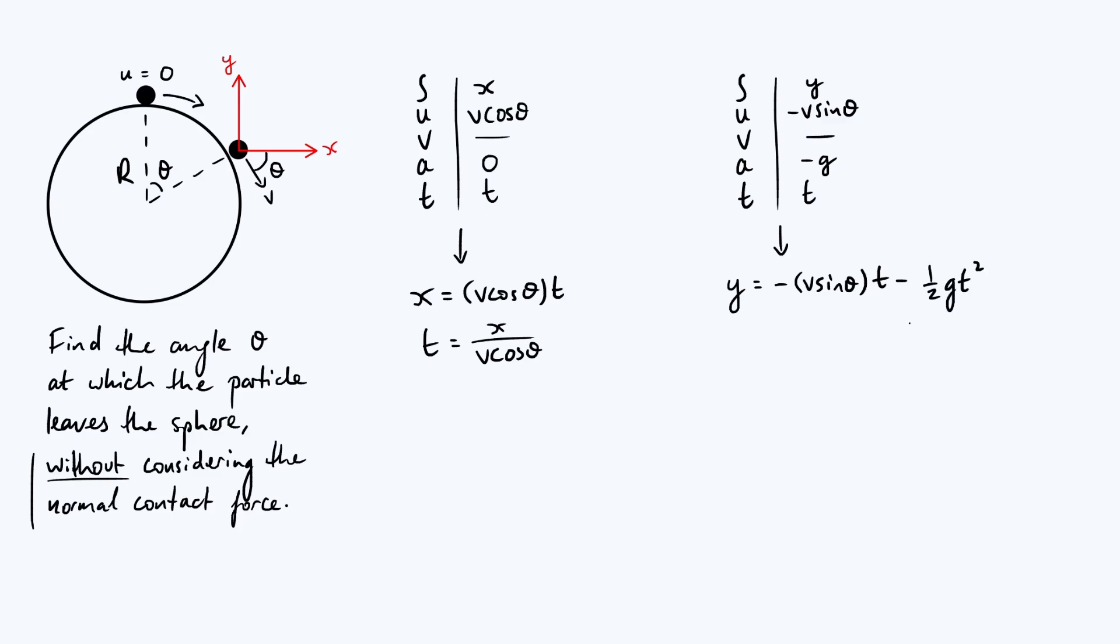Substituting t for x over v cos theta, you get y equals minus v sine theta times x over v cos theta. The v's cancel and sine over cos is tan theta, so it's minus tan theta x. Then you get a big fraction as your next term: minus g on top, 2 on the bottom, and v squared cos squared theta from your t in terms of x. All of that is the coefficient of x squared.